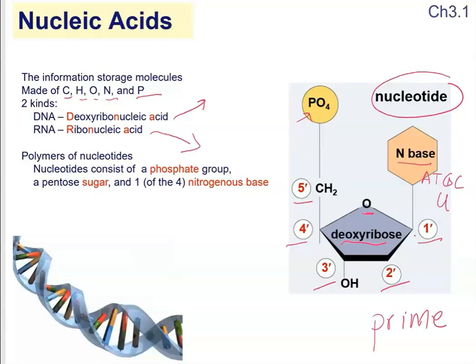The importance of the carbon number is to locate where exactly we're going to be able to carry out dehydration synthesis to link up those monomers. And also we want to see where the base is located. At one prime end you will have the base, three prime end will have a very important functional group which is hydroxyl group, and then five prime end will have a phosphate group. These three main components make up a nucleotide.